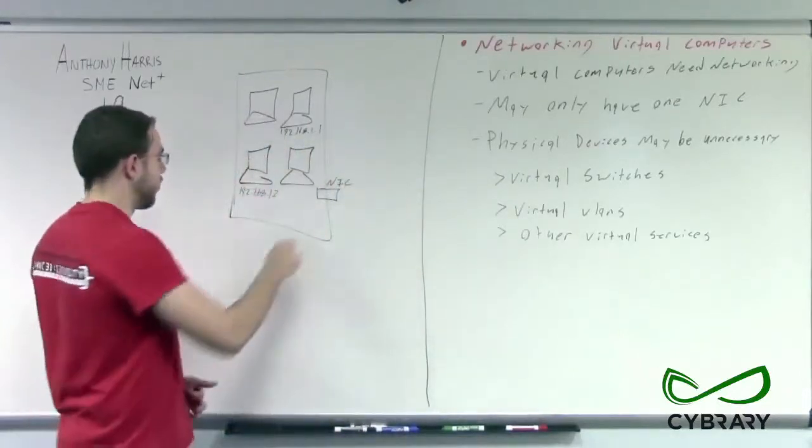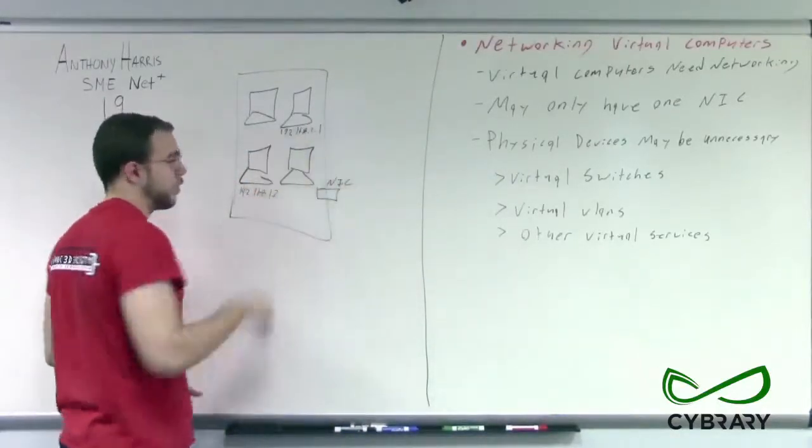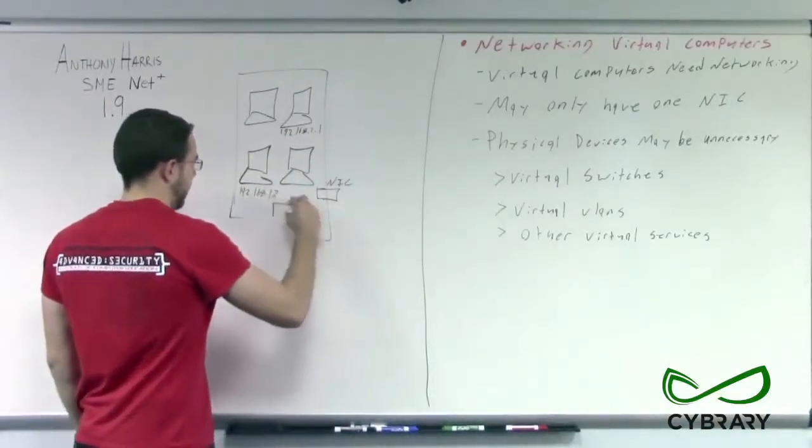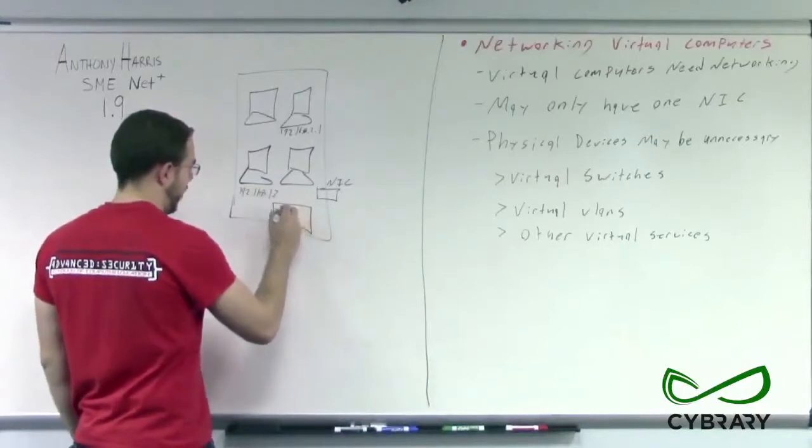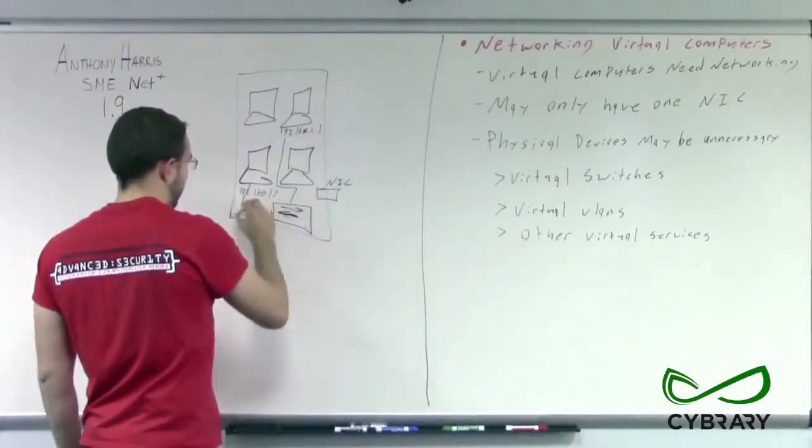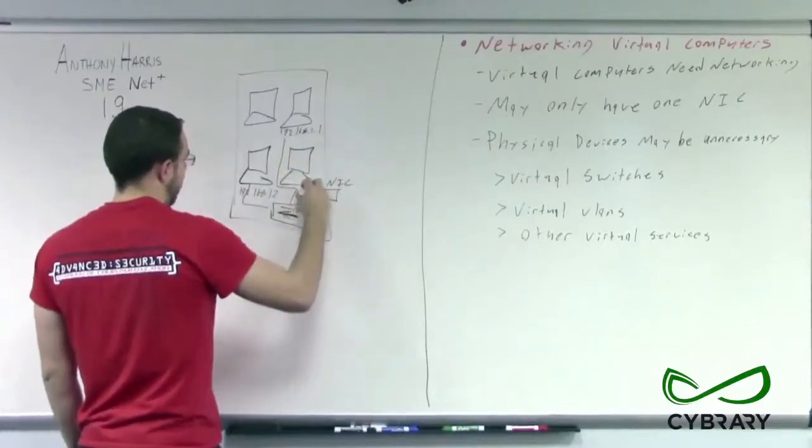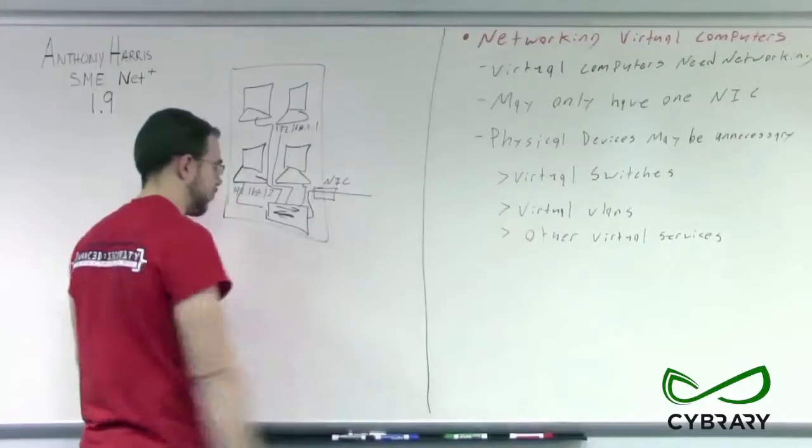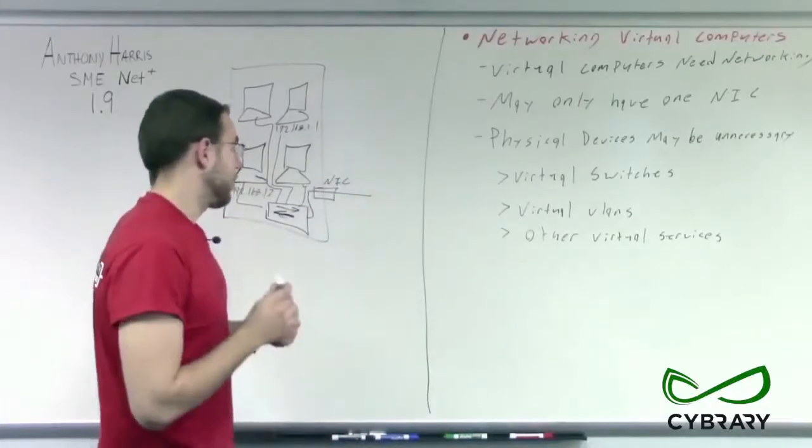Rather than having to install multiple network interface cards for our multiple different networks, we could instead have a virtual switch which allows VLAN connections between these multiple devices and then talk out through a trunk line through our network interface card.